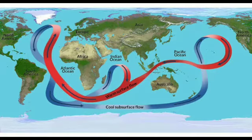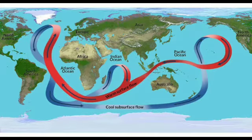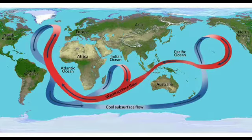The pattern of oceanic circulation is produced by the interaction of a number of factors: planetary winds, variation in seawater temperatures, variation in water salinity, and rotation of the earth.